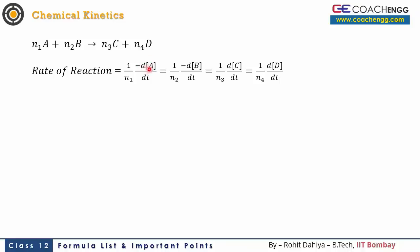The square brackets mean concentration. dA/dt is the rate of change of concentration of A. Since A is a reactant, its quantity decreases, so the term dA/dt will be negative, and to absorb that we place a minus sign here.